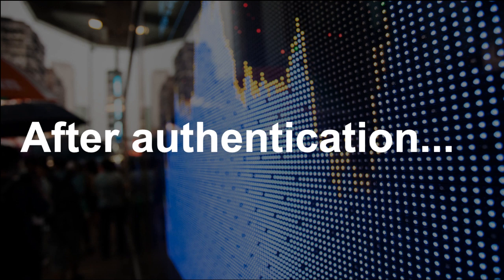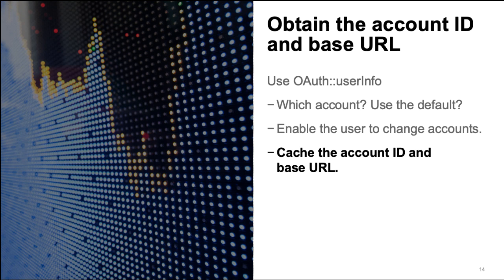After your application has obtained an access token, there are a couple of additional steps before you're ready to make an API call. To make an API call, you also need the user's account ID and base URL. Use the OAuth UserInfo API call to obtain this information. The user's account or accounts and base URLs change very infrequently, so your application should cache the results for at least a day or until the user signs in again. Many OAuth authorization code grant libraries can automatically download the user's information. See the code examples on GitHub for more information.